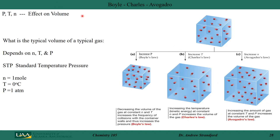We can summarize three of those laws by looking at the effect of pressure, temperature, and amount of gas on volume. In Boyle's law, if I increase the pressure, volume decreases. In Charles' law, if I increase the temperature, volume increases. In Avogadro's law, if I increase the amount of gas, volume increases. So volume depends on the amount of gas, the temperature, and the pressure.